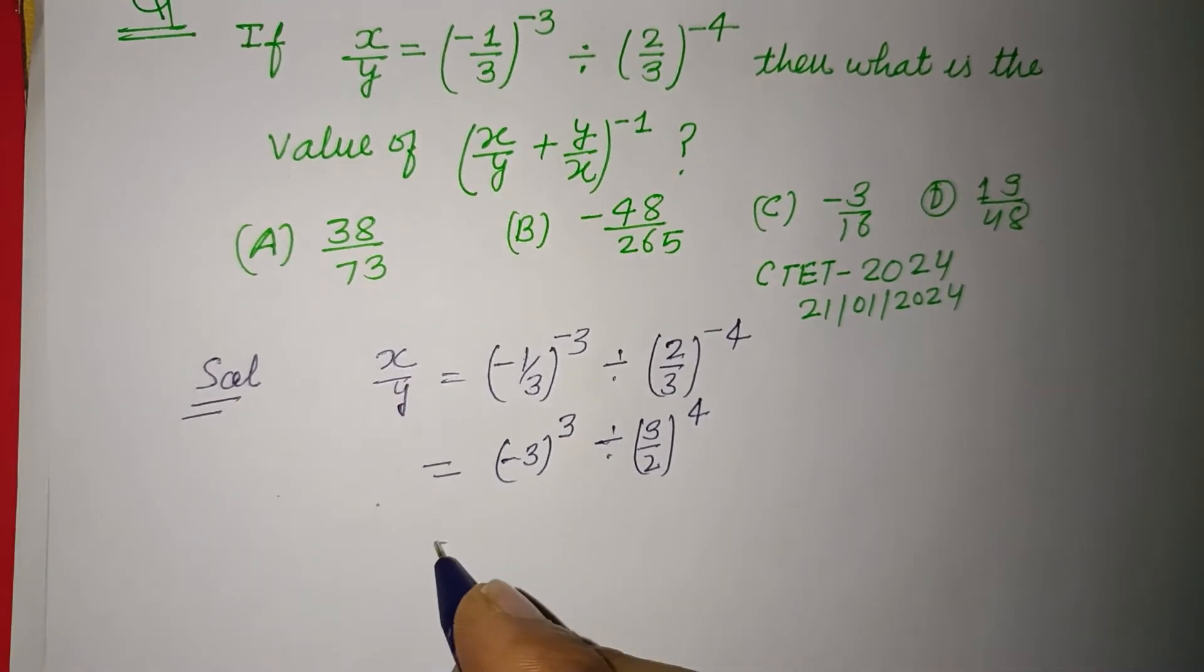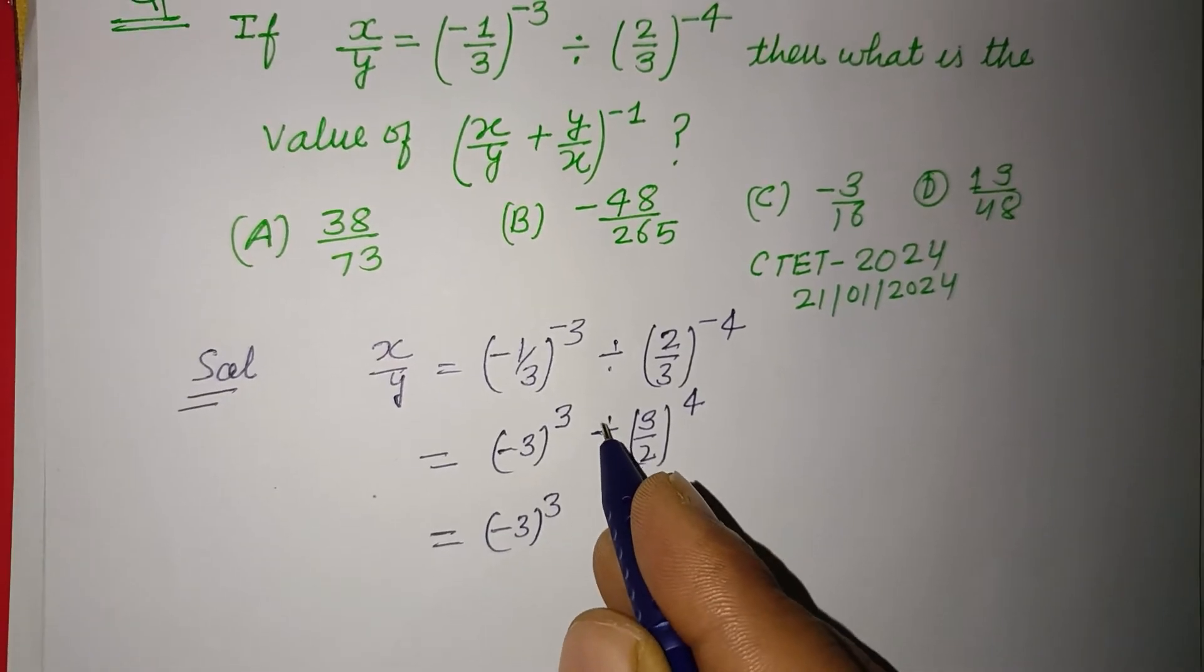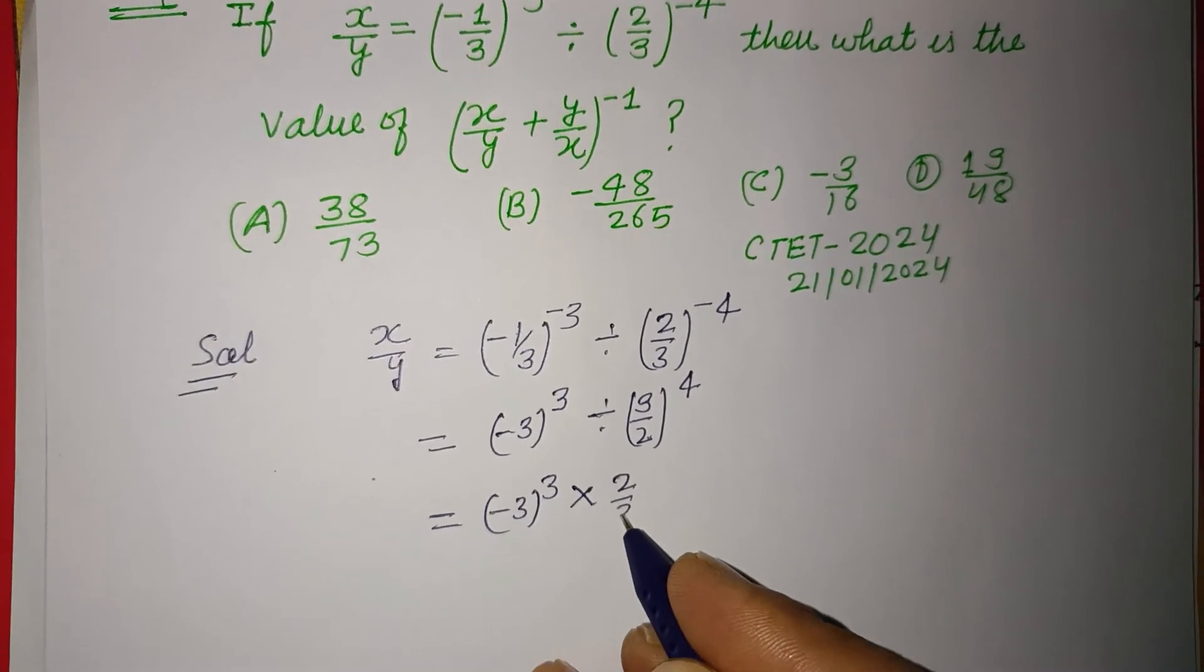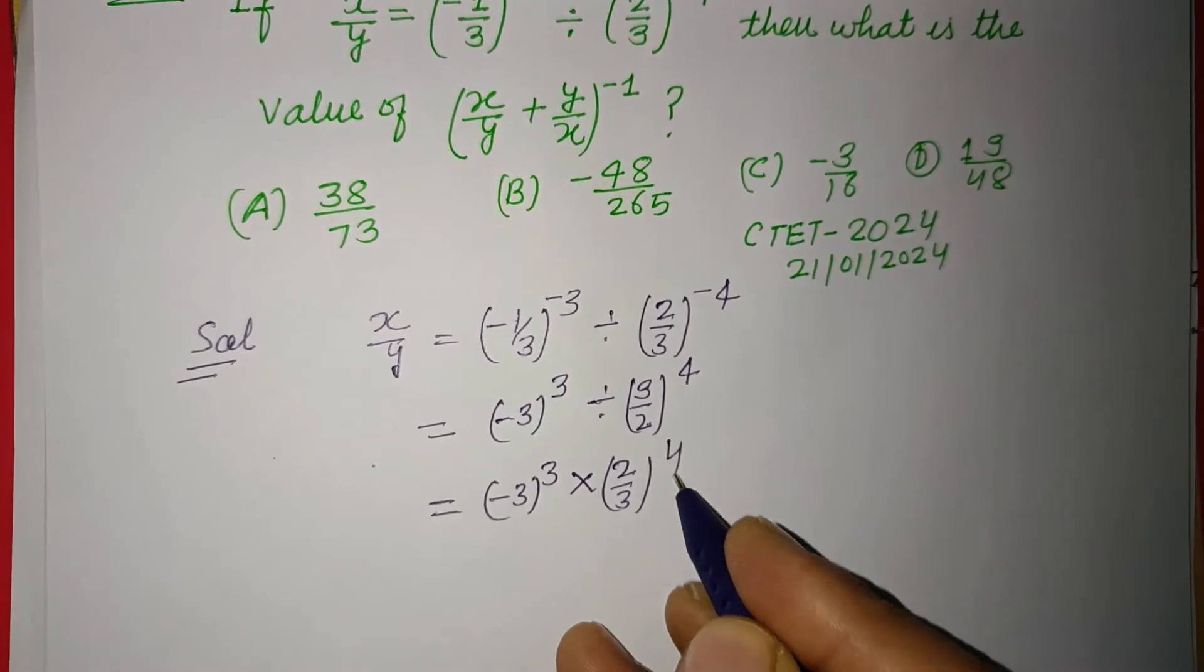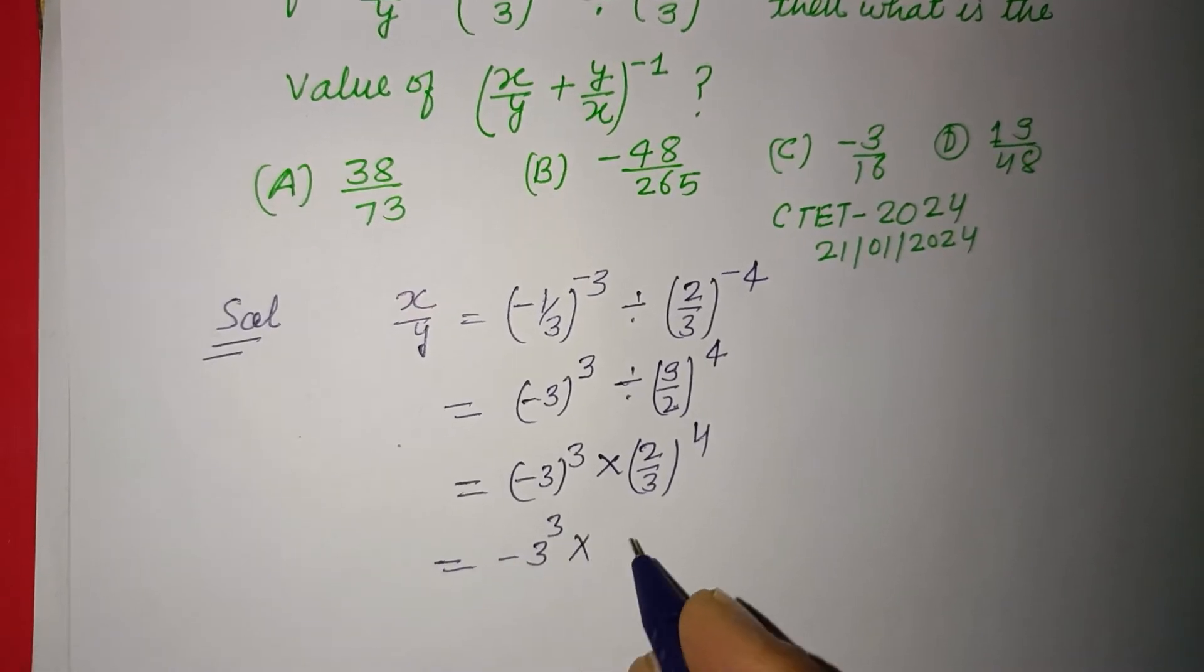When we change division sign into multiplication, we also reverse, the sign remains same. Okay, so this is (-3)^3 times (2)^4 over (3)^4.